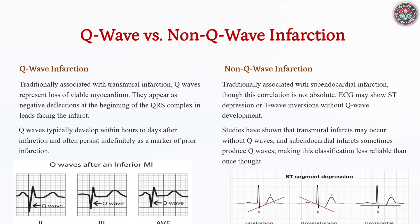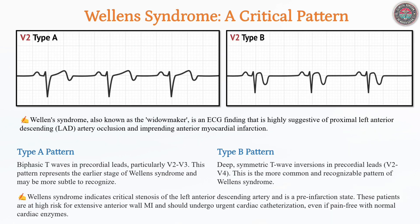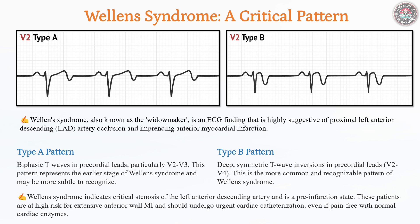Wellen's syndrome signals critical proximal LAD stenosis and a high risk of extensive anterior MI. ECG findings include biphasic T-waves (Type A) or deep, symmetric T-wave inversions (Type B) in V2–V3. Unlike acute MI, there is no significant ST elevation and biomarkers may be normal. Early recognition is crucial, as these patients require urgent angiography to prevent major infarction.